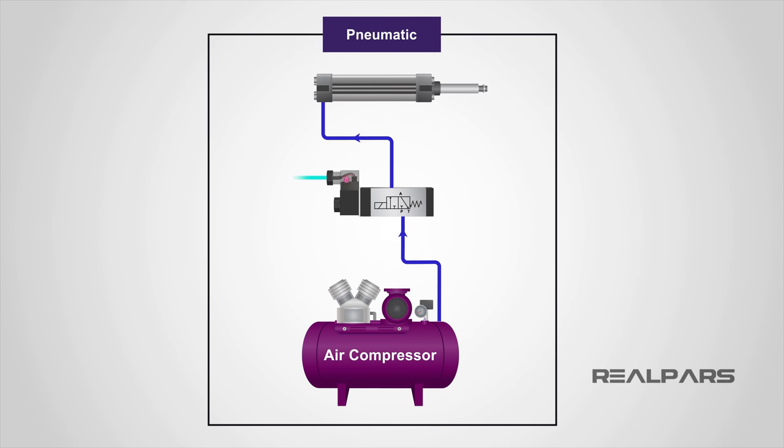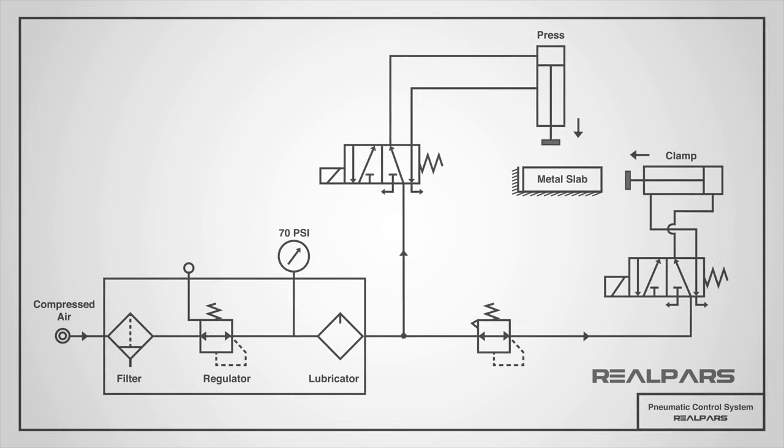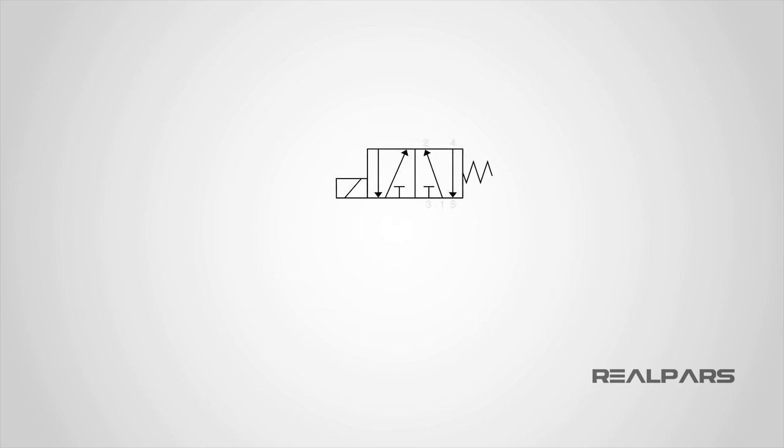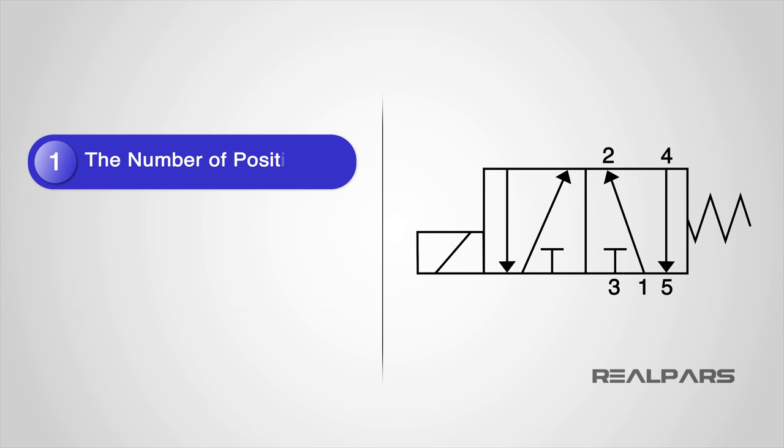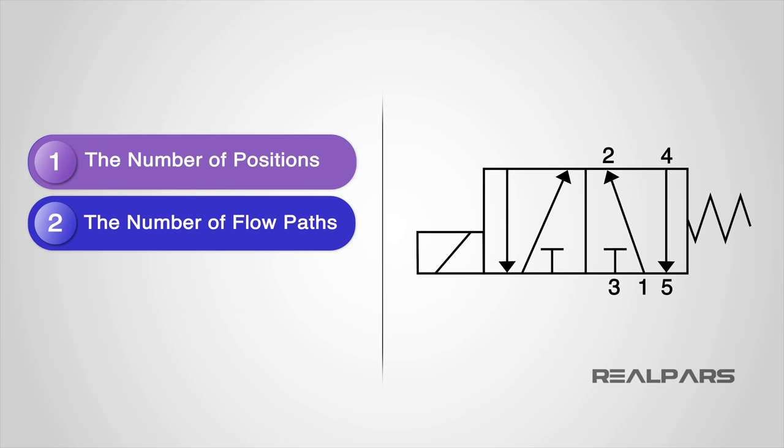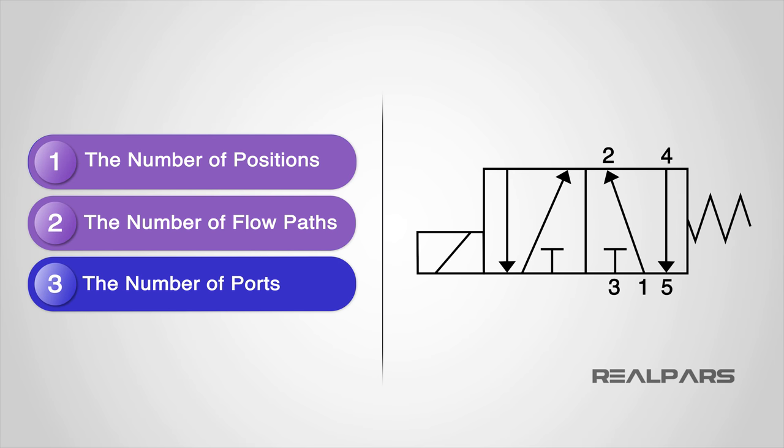As we already know, directional air valves, in particular spool valves, are the building blocks of pneumatic control. In engineering drawings, pneumatic circuit symbols provide detailed information about the valve they represent. Symbols show the methods of actuation, the number of positions, the flow paths, and the number of ports a valve has.